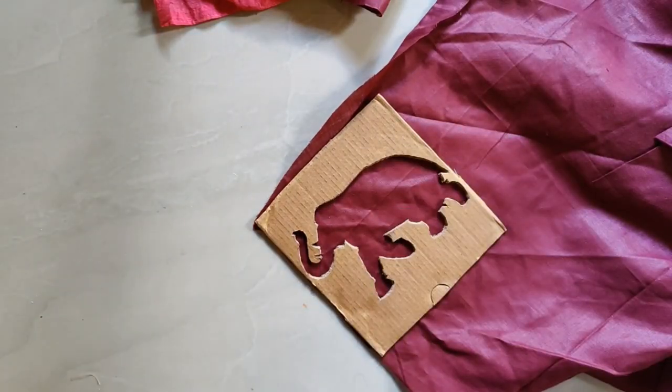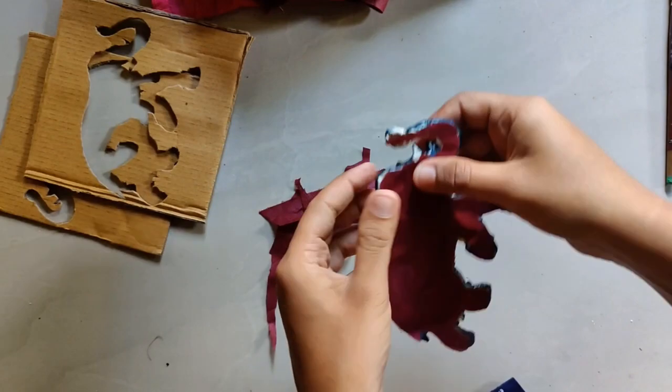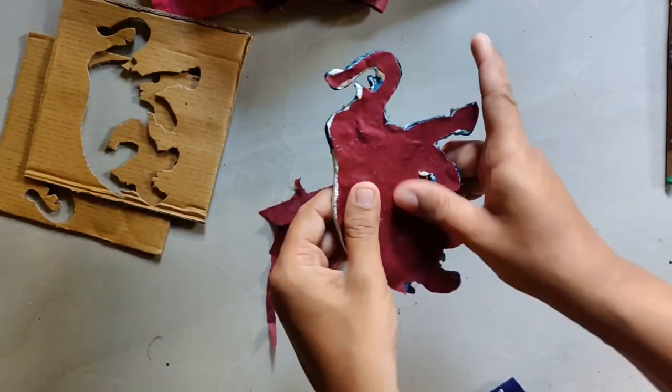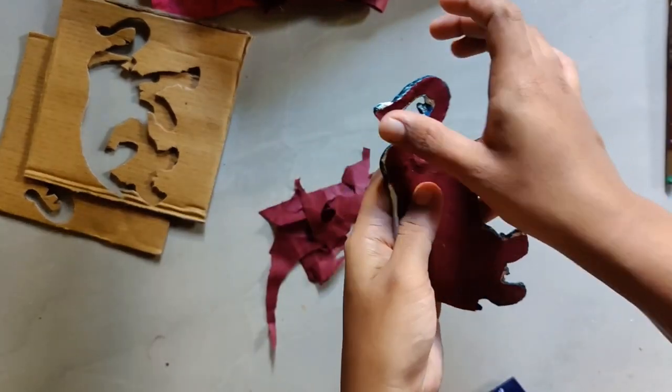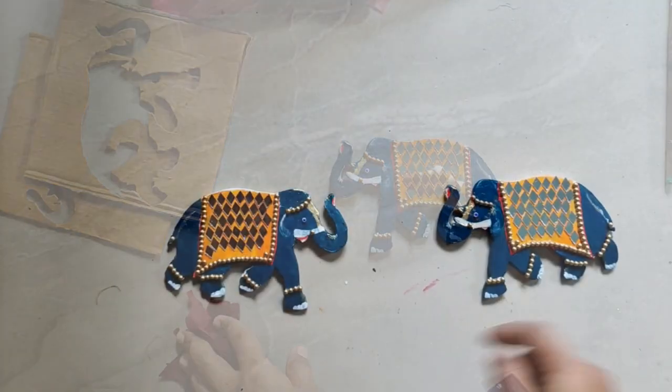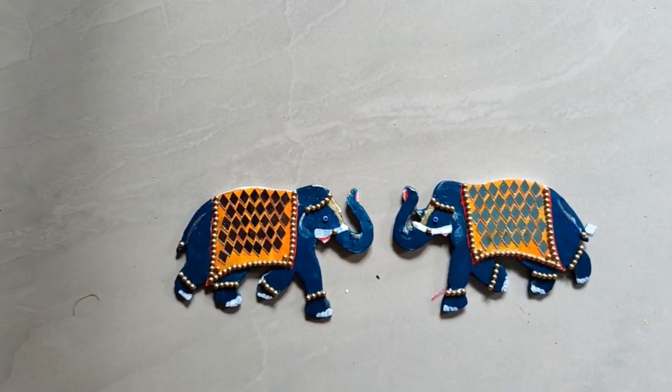So once everything is done, we'll be using a fabric or you can also use a chart to back it up and then you can place it wherever you want. Like you can either stick it or you can also place it on your tables. Hope this video was useful. Meet you guys in the next video. Until then, Namaste!